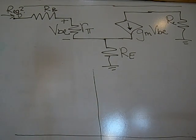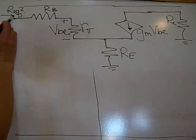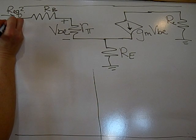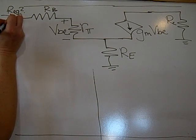This is the derivation for the resistance reflection rule. This is part one which is going to show the derivation when you're looking at the base and finding the equivalent resistance.